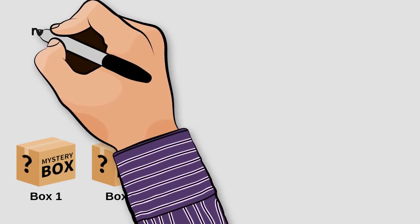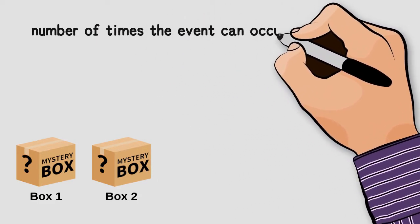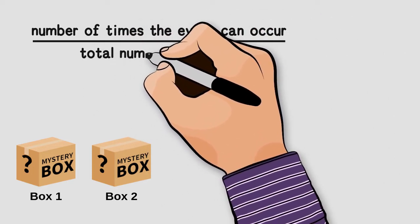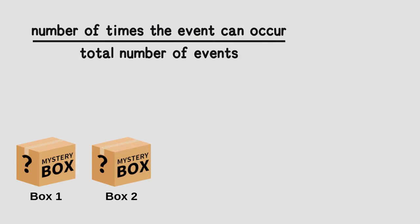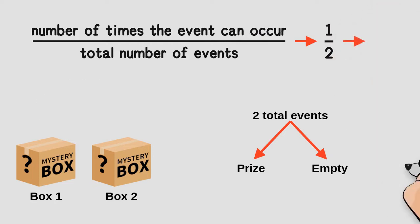We can calculate the probability of choosing the box with the prize using the following fraction: the number of times the event can occur divided by the total number of events. In our case, there are two possible outcomes — empty box or box with prize — so total number of events equals two. The number of times the event can occur is one, because we can only choose one prize box. That gives us one divided by two, which equals 0.5 — a 50/50 chance.